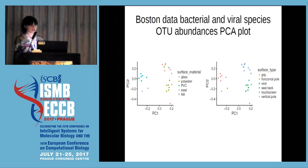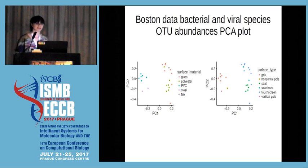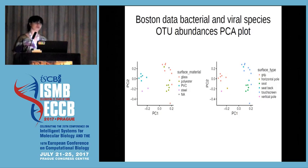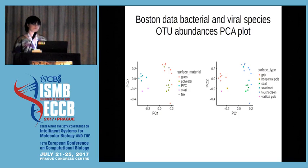What about the connection with the surface material and surface type? Here the Boston data shows a result that is really expected: Boston data had a very clear correlation with surface material. But what is bad about this is that they have one surface material which corresponds to one surface type, and in this way it's impossible to differentiate which variable is more influential. So if you would design your experiment, you should try to collect samples from wooden surfaces from different types of objects, like benches or handrails.